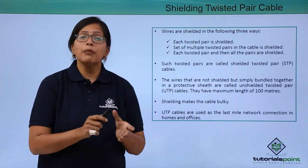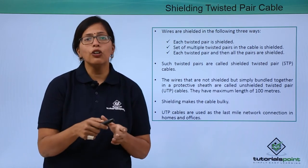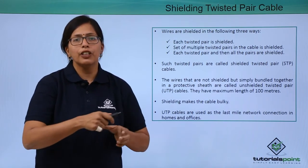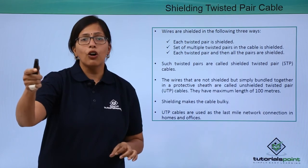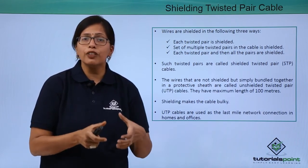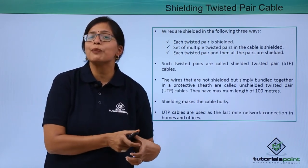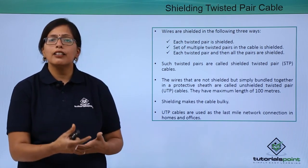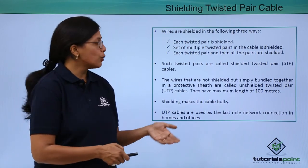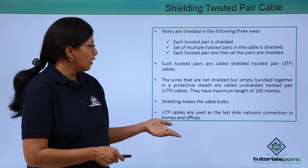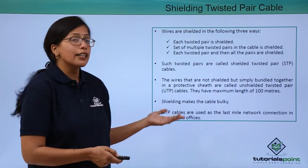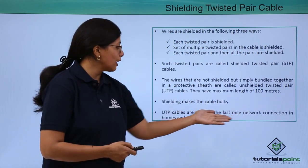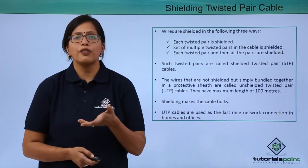But shielding makes the cable very bulky, so it is usually not preferred when data is to be transferred over a long distance, as the installation of the cables becomes very difficult. If no shielding is applied, then it is called unshielded twisted pair. The UTP cables — that is, the unshielded cables — are used as the last mile connection in homes and offices.